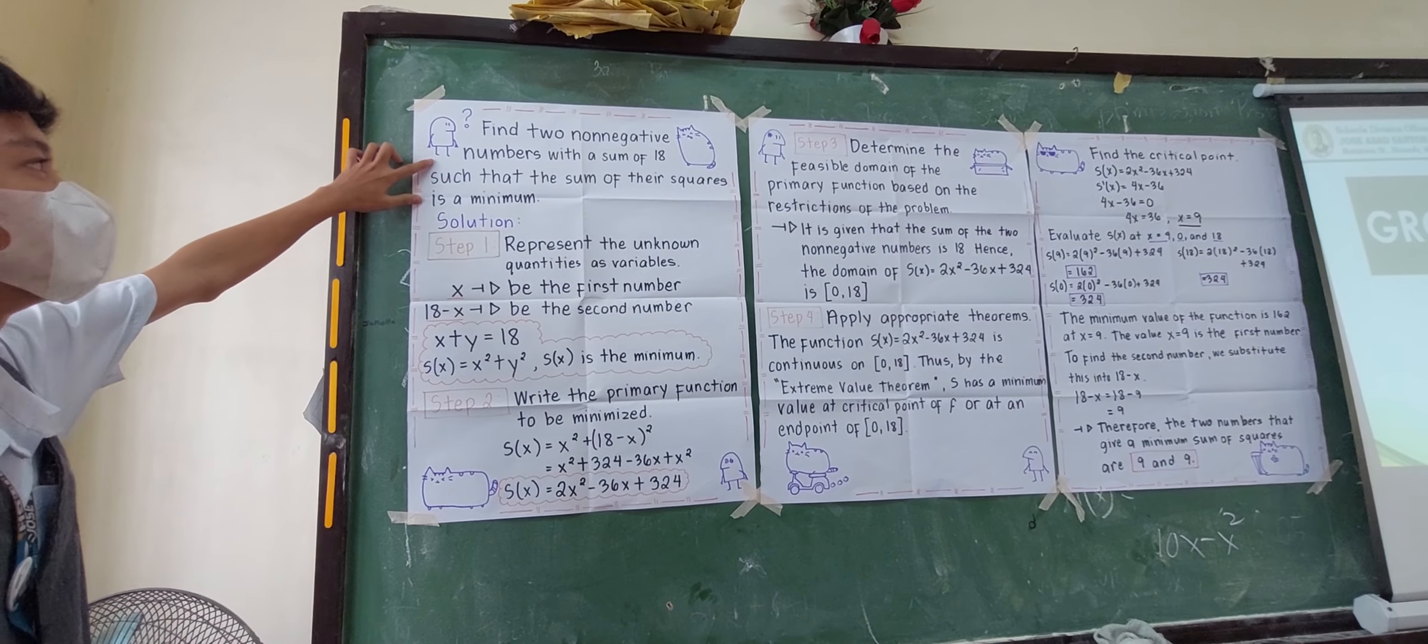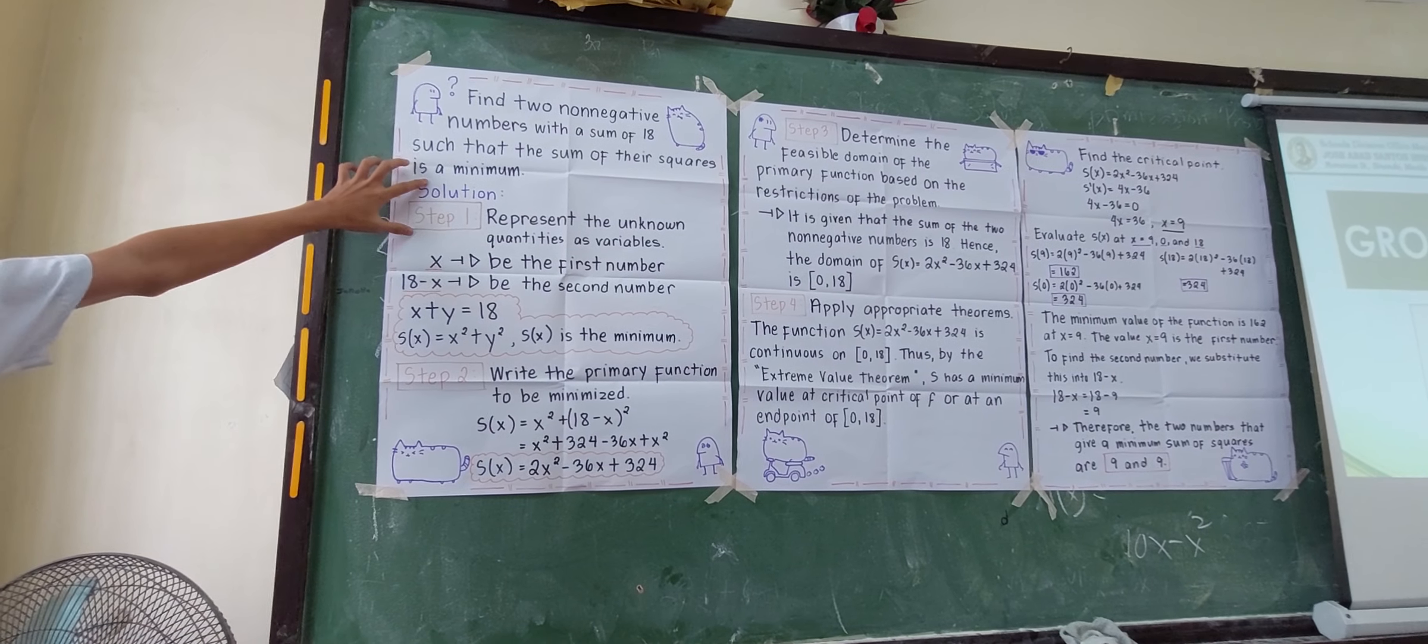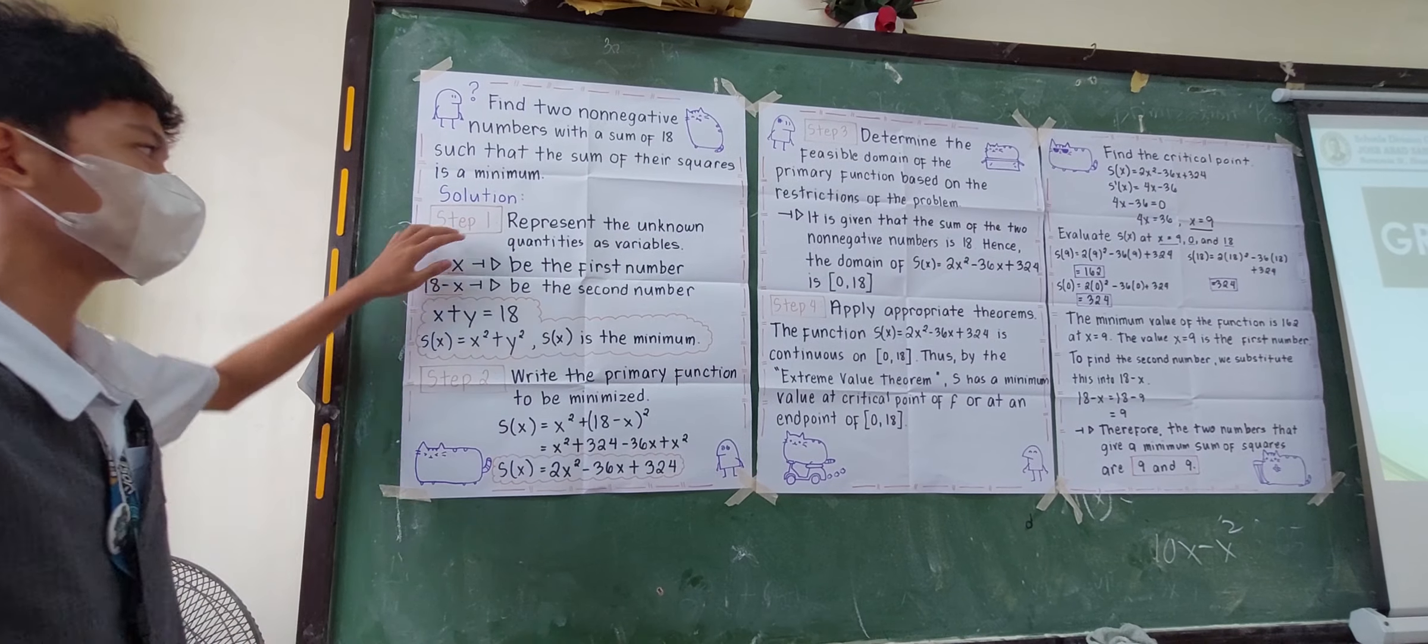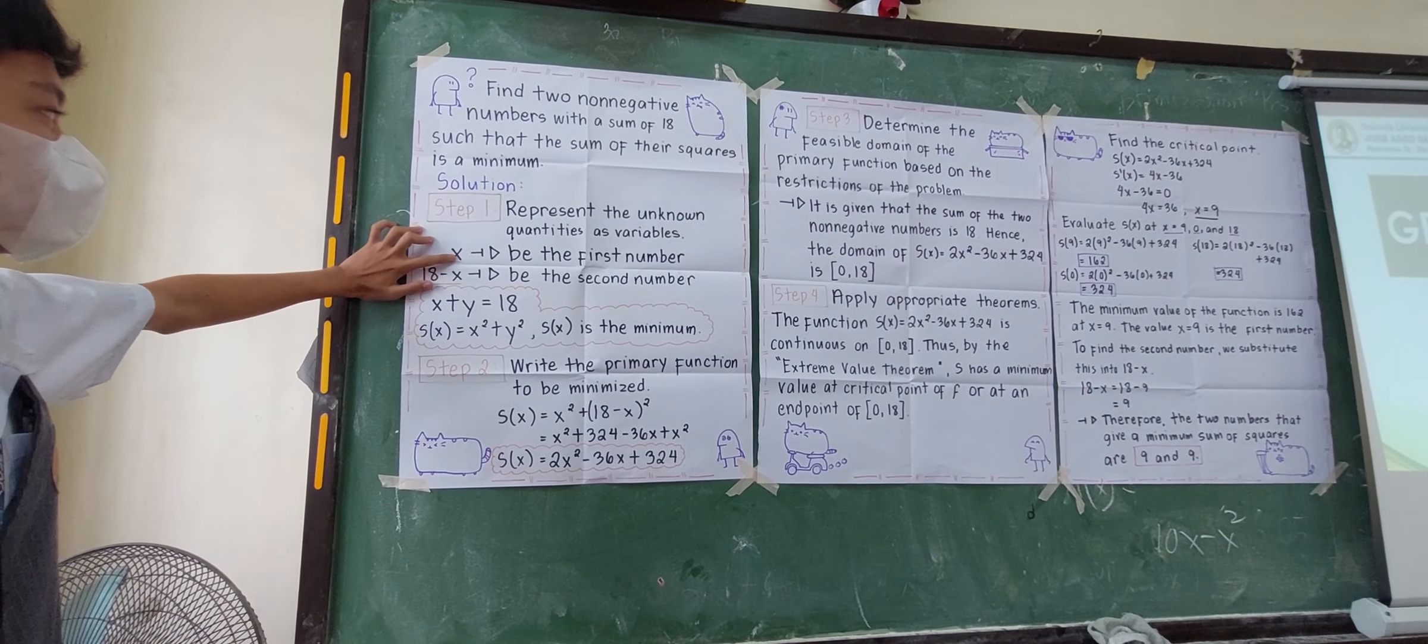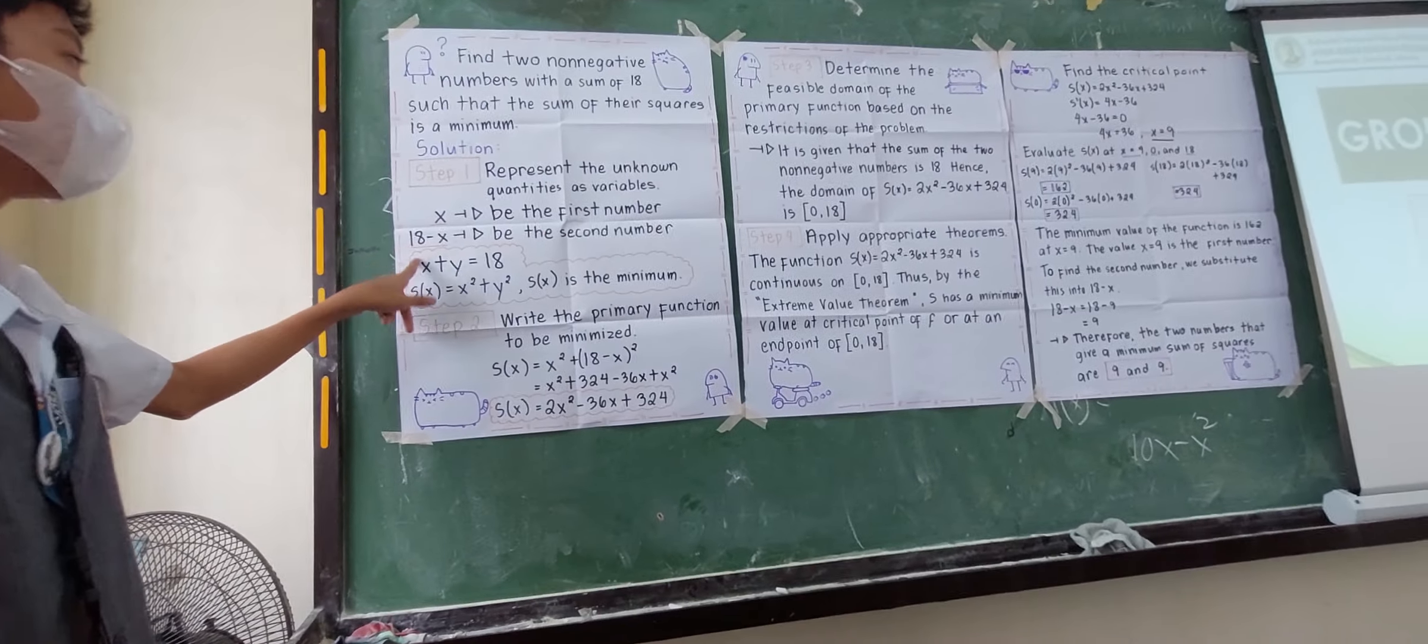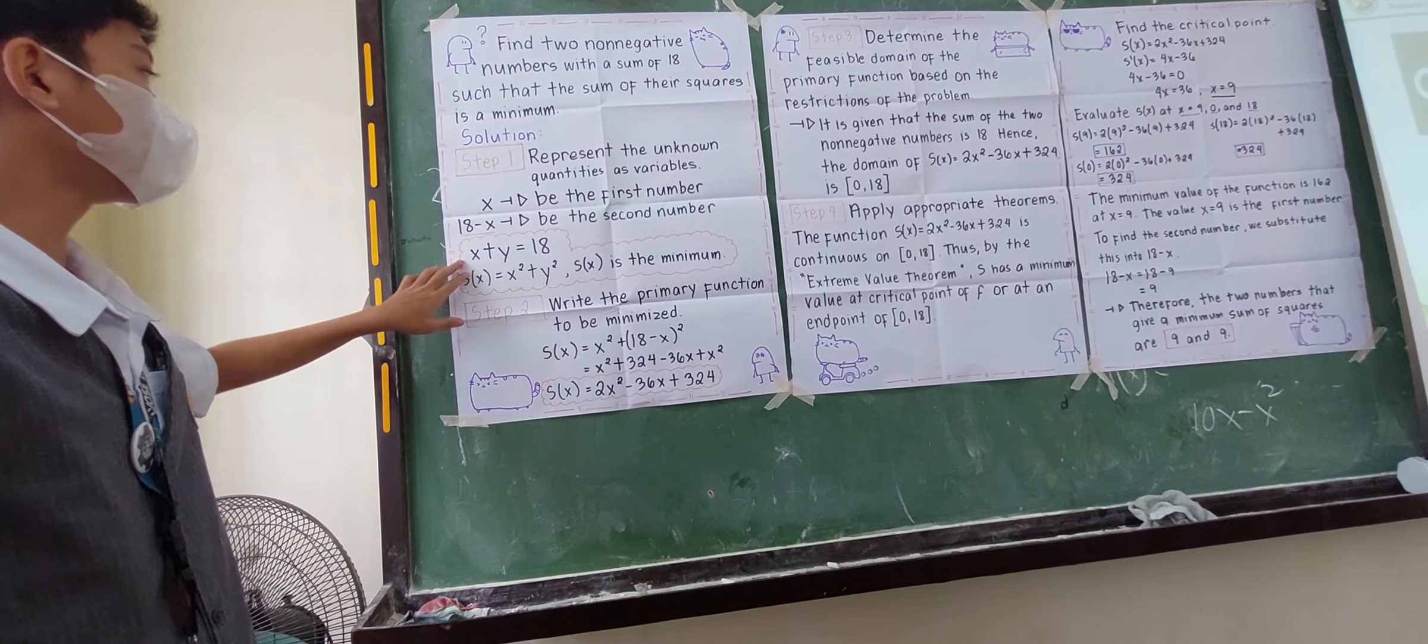Find two numbers with a sum of 18 such that the sum of their squares is a minimum. For our solution, step 1: represent the unknown quantities as variables. Let X be the first number and 18 minus X be the second number.